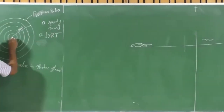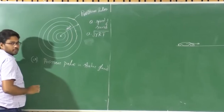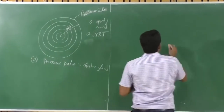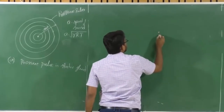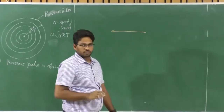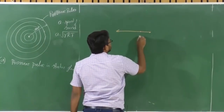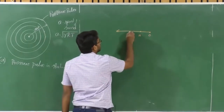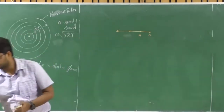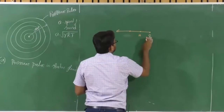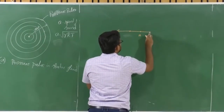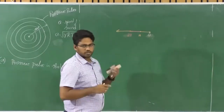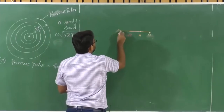Consider the case where the position of a disturbance keeps moving. Let us say this is your initial point of disturbance and you are moving in this direction. We'll analyze this disturbance at time t0, and this location corresponds to one second, this location to two seconds, and we'll also look at three seconds.